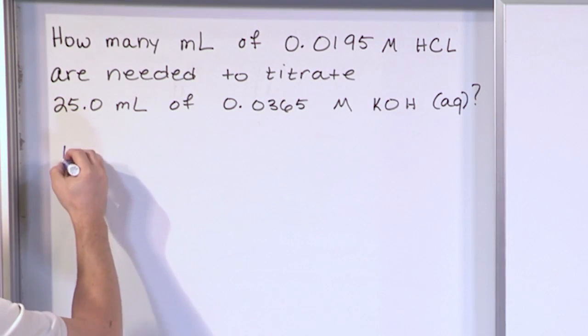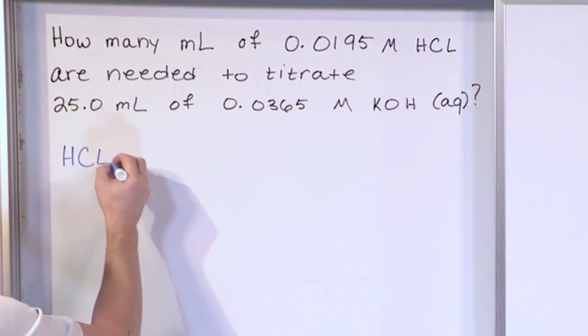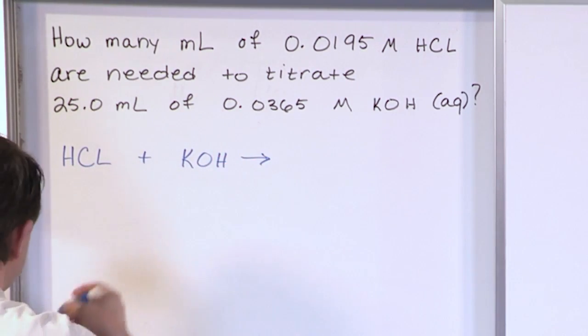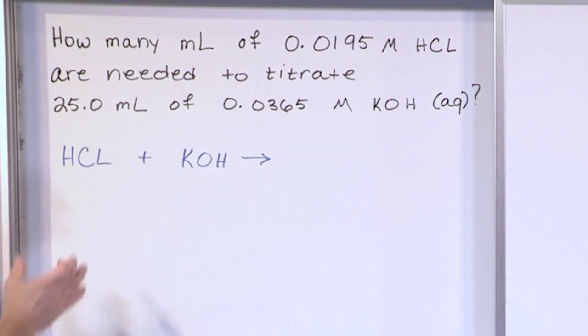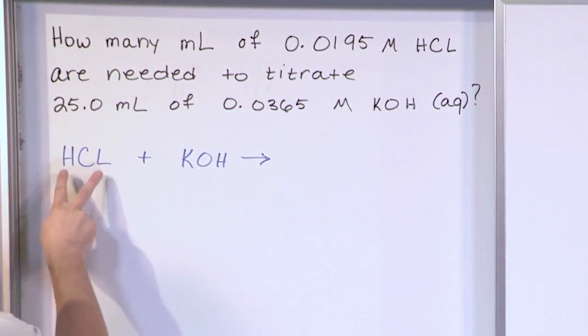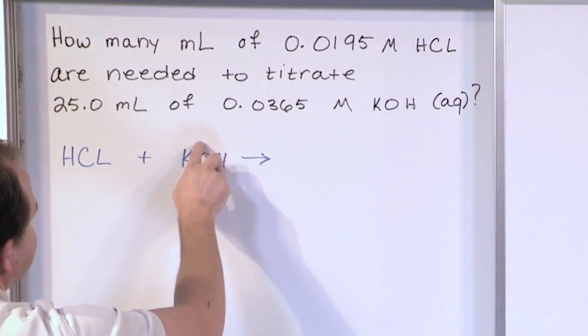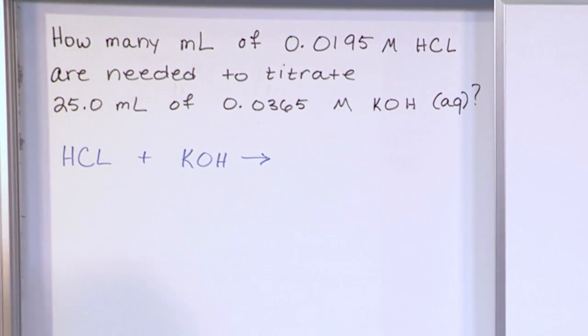So let's say hydrochloric acid plus potassium hydroxide. What do you think that's going to actually yield? Well, this is an acid and this is a base. So what you would expect is if you look at this, we have hydrogen and chlorine here, and we have potassium and then a hydroxide. This kind of is bound together as a hydroxide here.